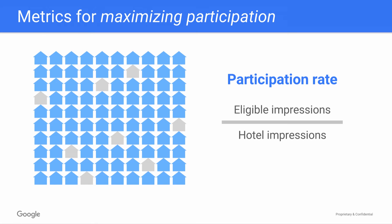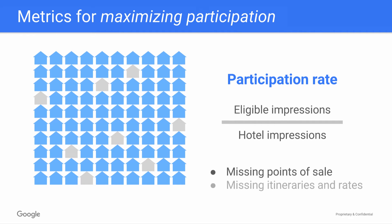We'll be going into this deeper in our next videos, but at a high level, common reasons you may not be at 100% participation include not providing applicable points of sale for all users looking for your hotels, and not providing itineraries and rates for all available searches.